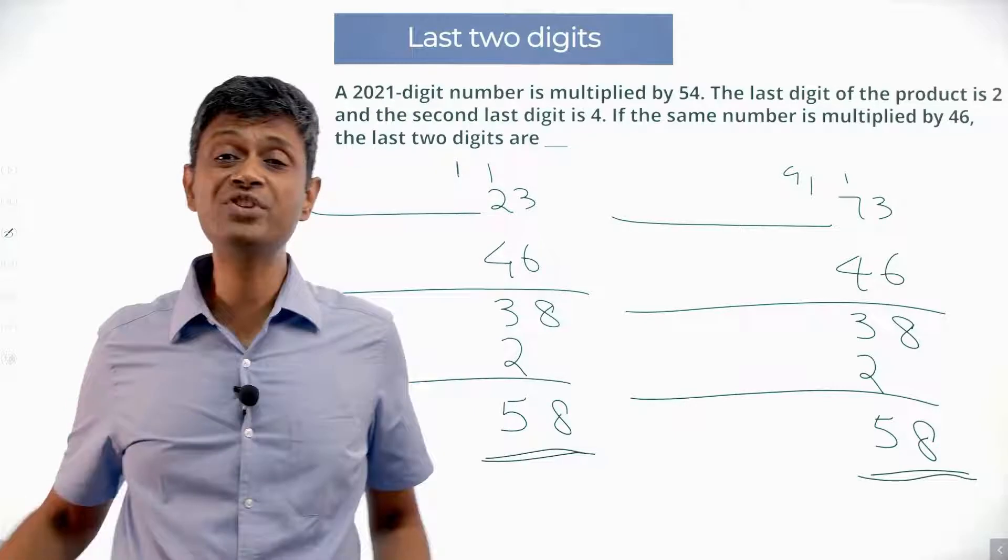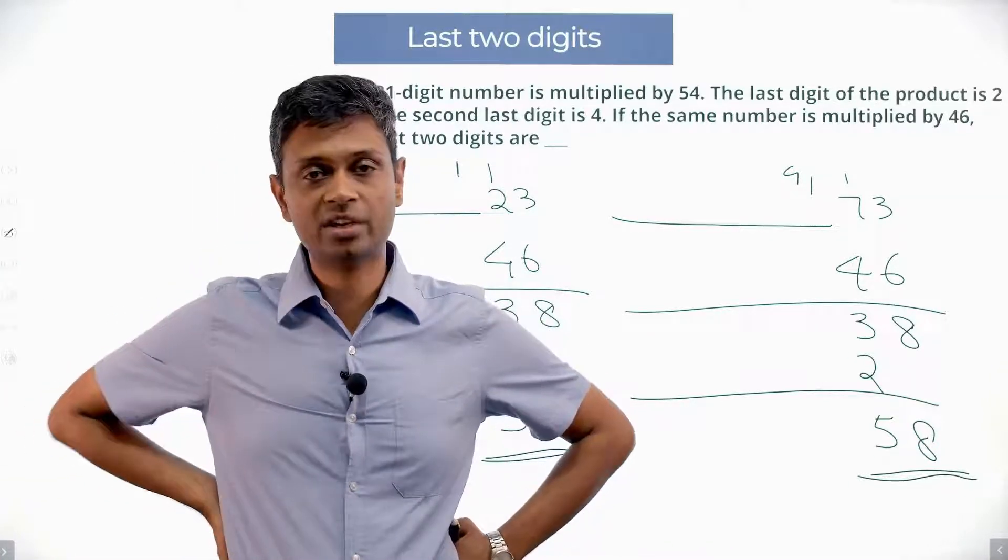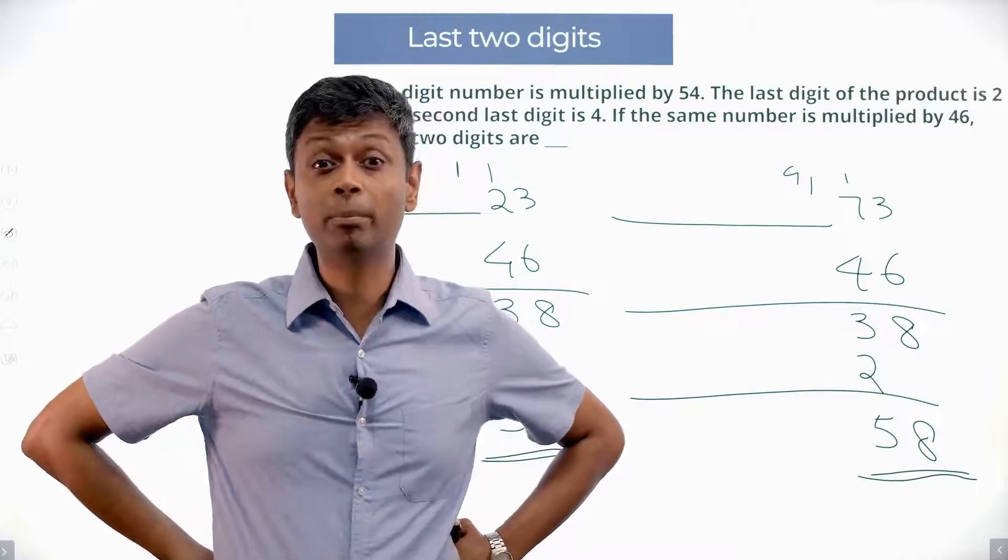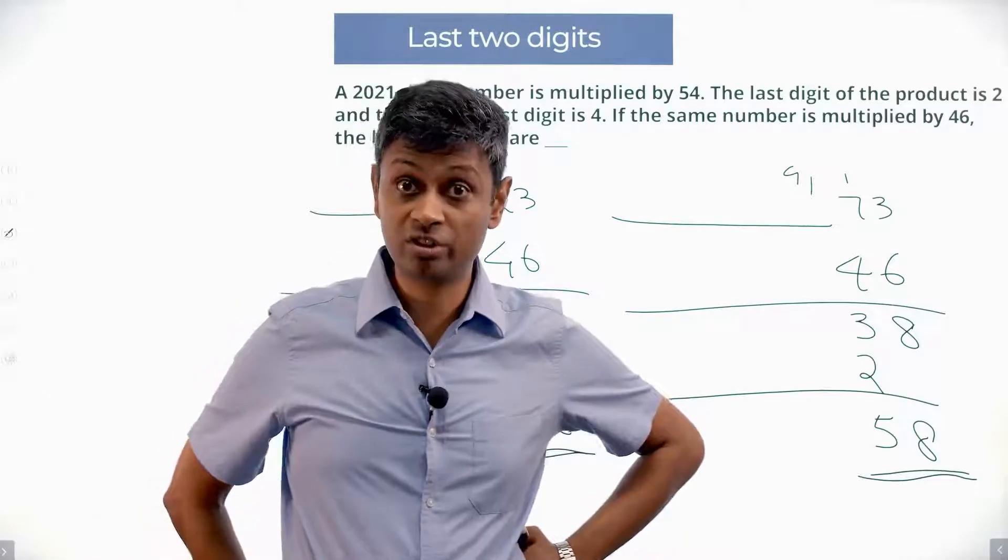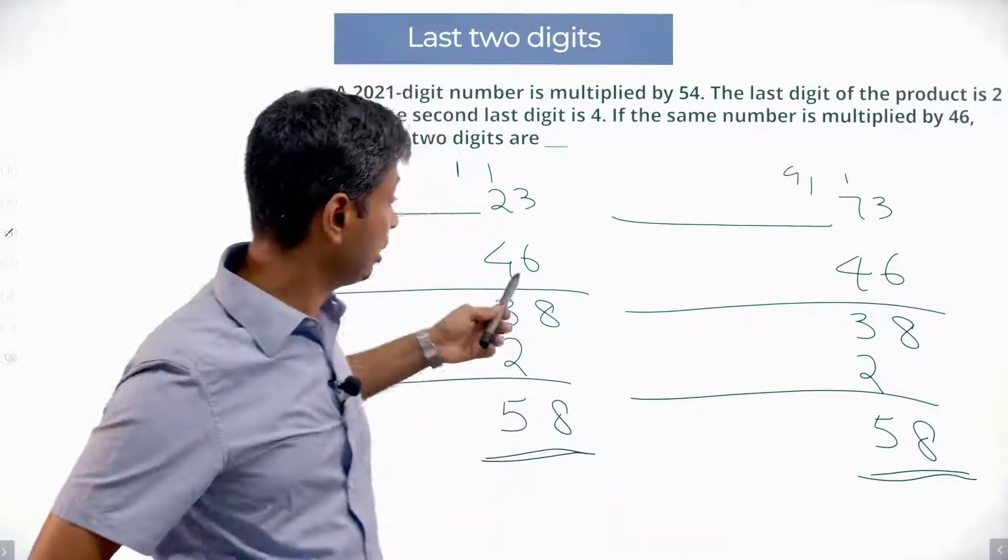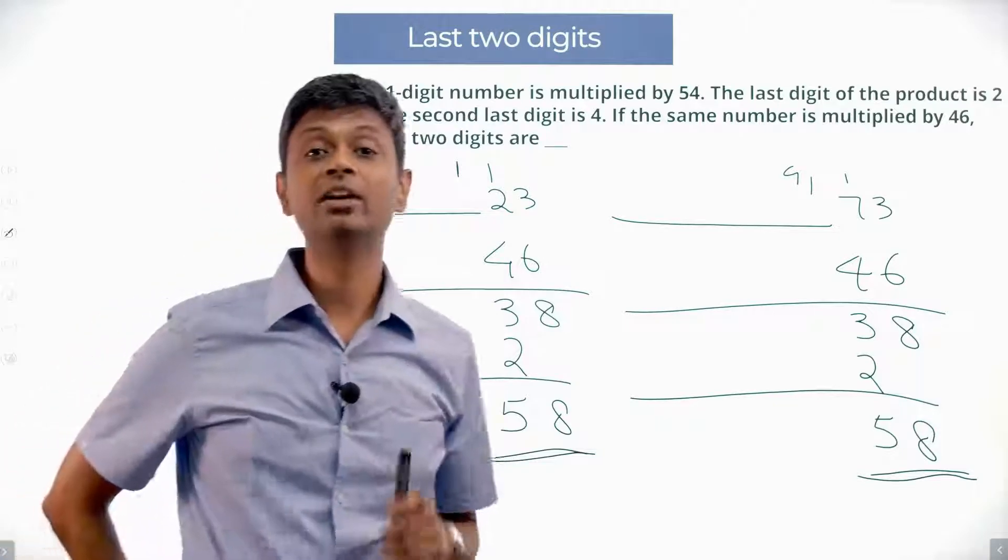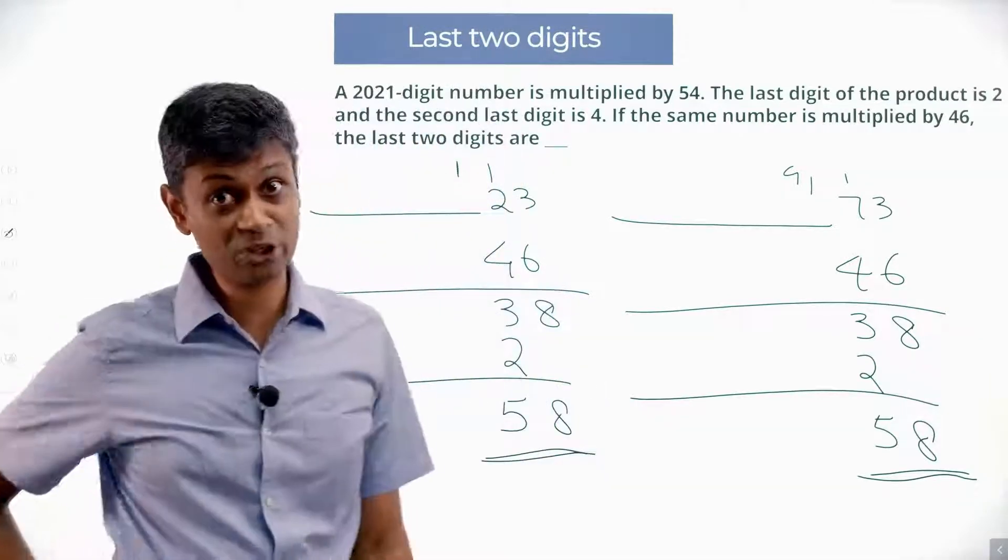That's what we want. Obviously, we cannot find this 2021-digit number. Just not possible. But if you do this methodically, then you can find what could be the last 2 digits. There are still 2 possibilities. But for both those possibilities, you multiply by 46 the last 2 digits, 58, 5, 8. That works. Now I am going to tell you the shortcut. A much simpler way of doing this.